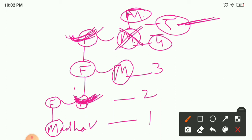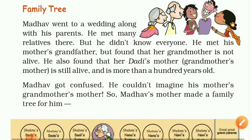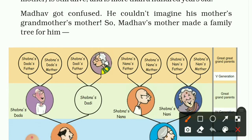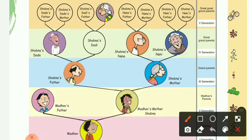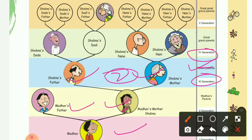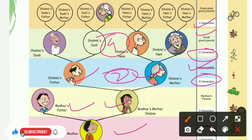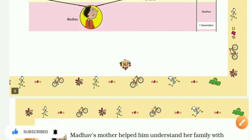To clear the confusion, his mother helped him understand this relation through a family tree. In the first generation here is Madhav; in the second generation are his parents — Madhav's father and mother; in the third generation are his grandparents; in the fourth generation, called great-grandparents, there are four persons; and in the fifth generation, called great-great-grandparents, there are eight persons.